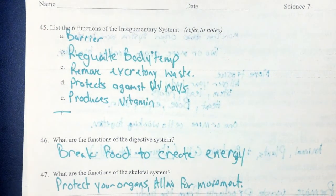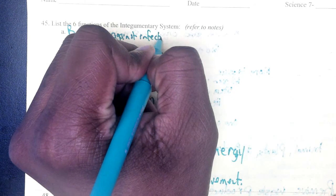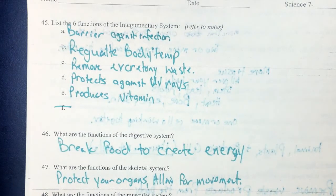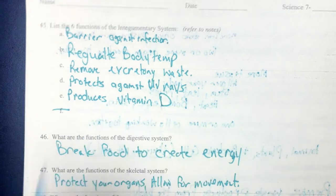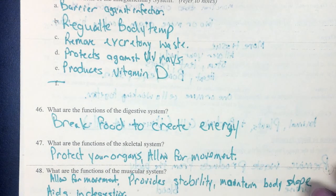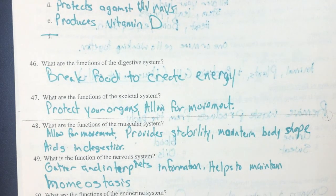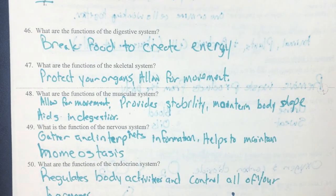The functions of the integumentary system — your skin — include: acting as a barrier against infection, regulating body temperature, removing excretory waste like sweat, protecting against UV radiation, and producing vitamin D for your body. The main function of the digestive system is to break down food to create energy. The skeletal system's main job is to protect your organs and allow for movement. The musculoskeletal system allows for movement, provides stability, and maintains your body's shape and temperature.